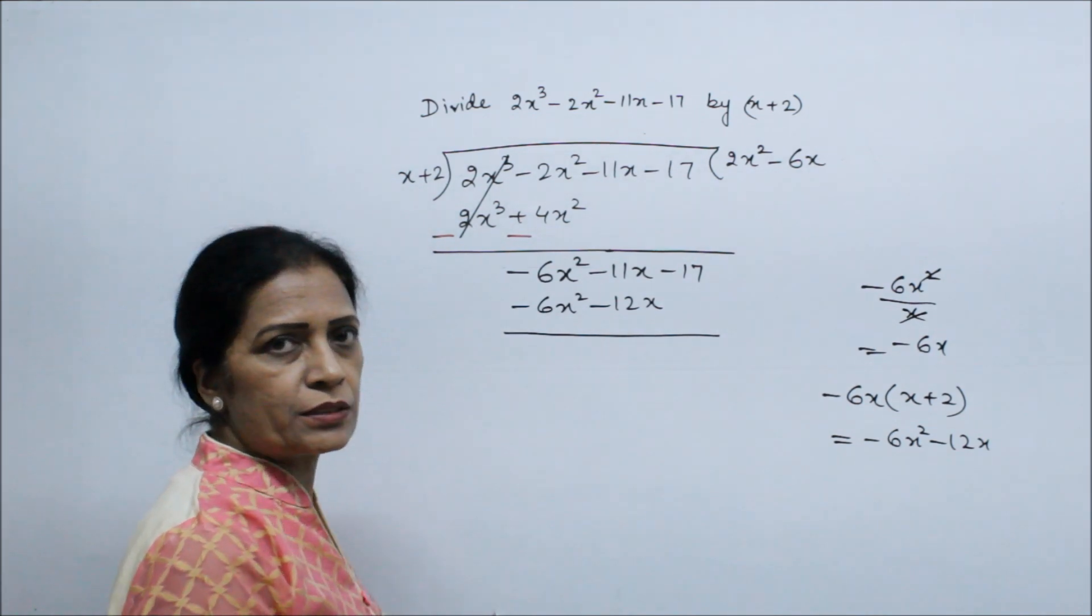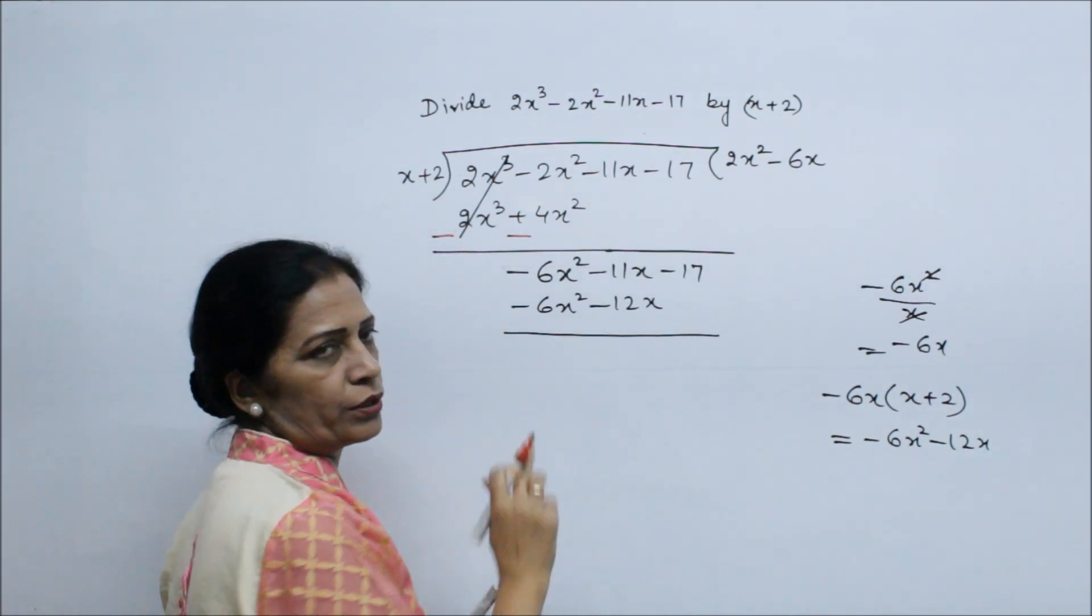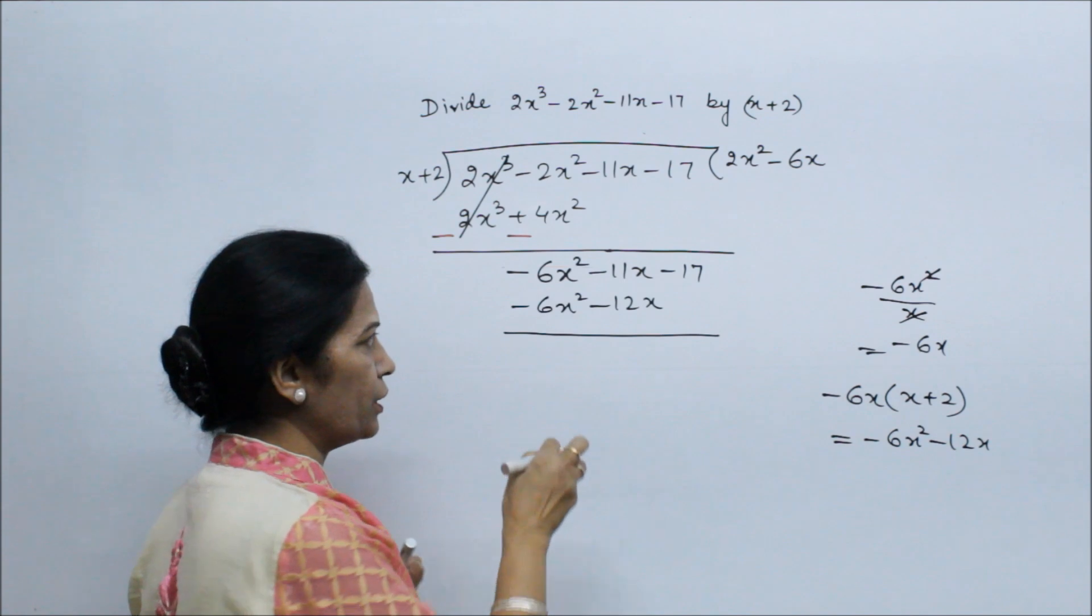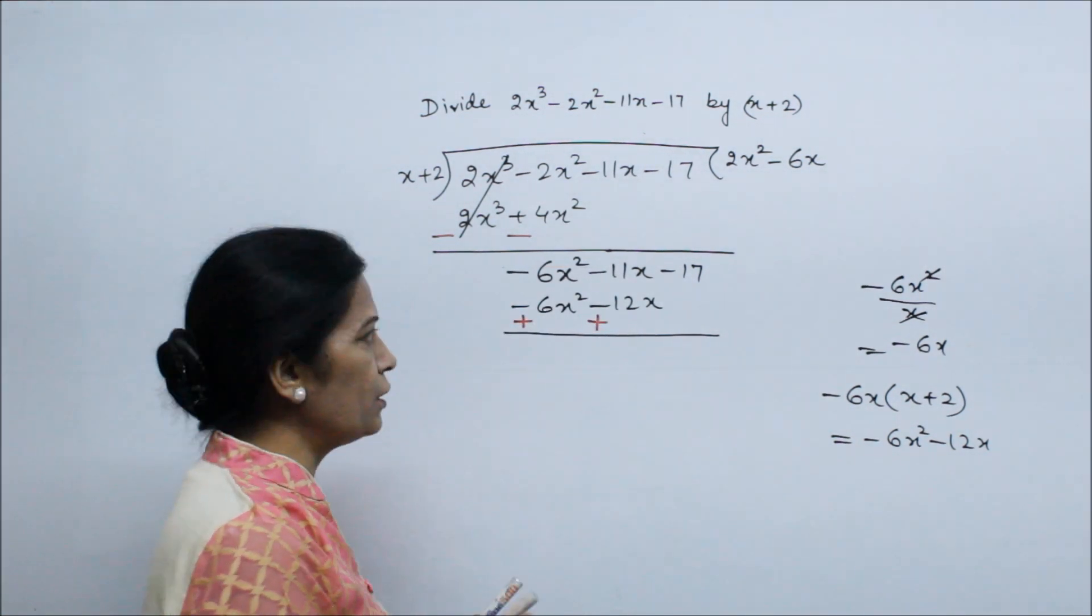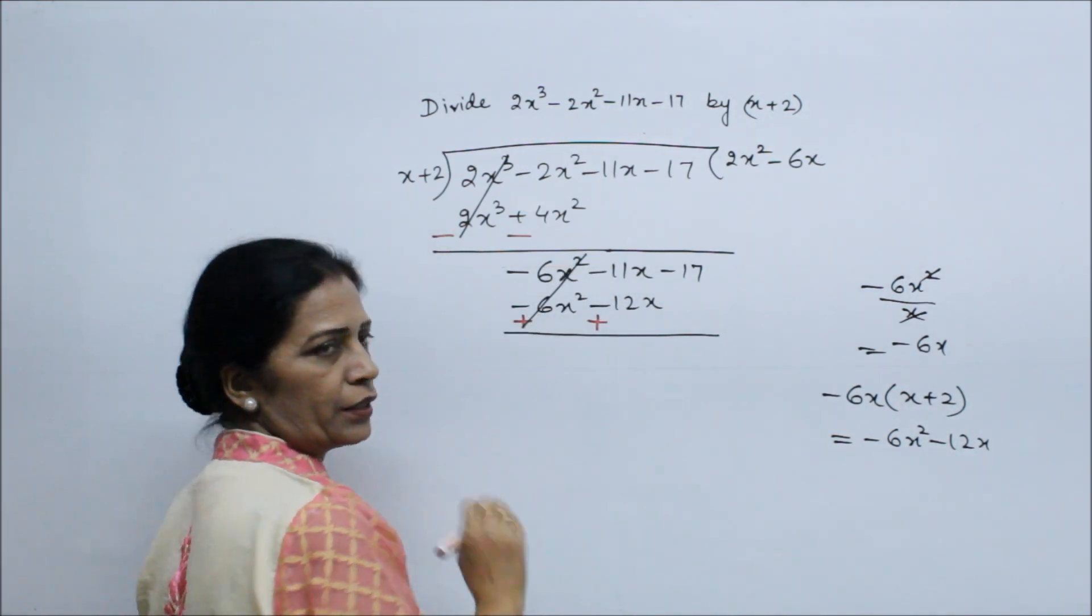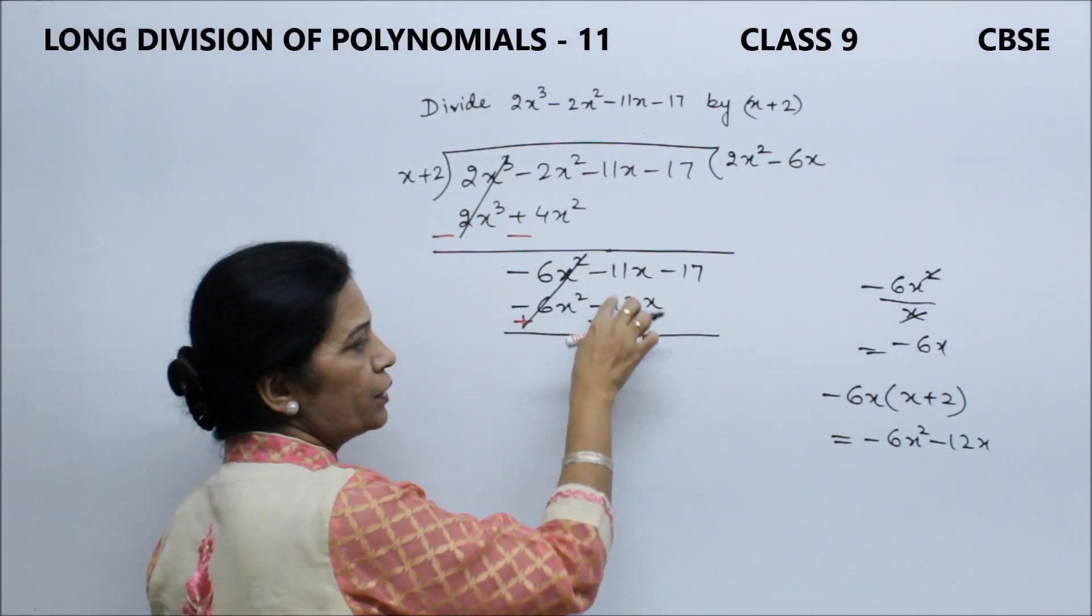Then we will subtract and change our sign. So here we cancel. How much answer? -11 and +12, so 1x is done because 12 is bigger, so the sign is positive.